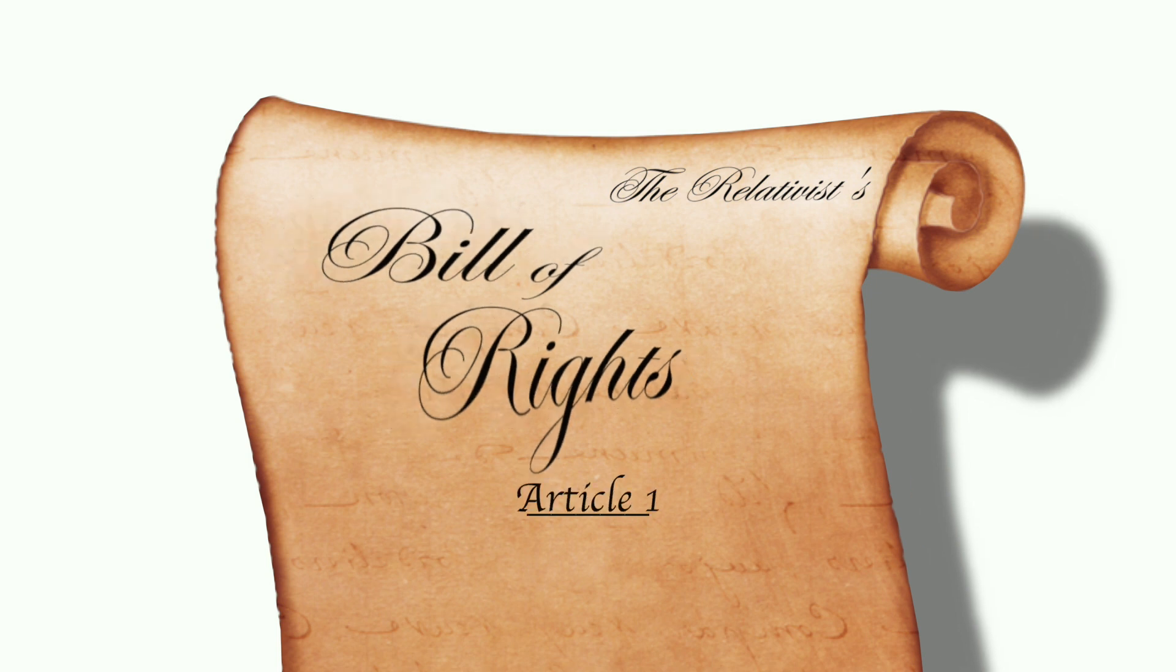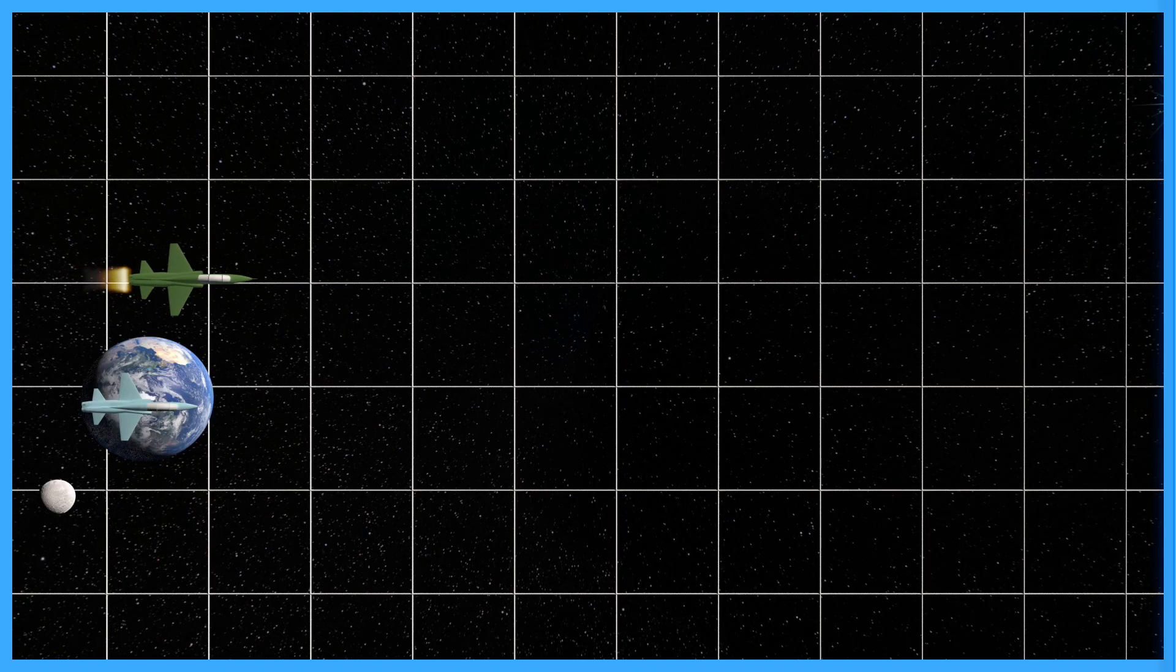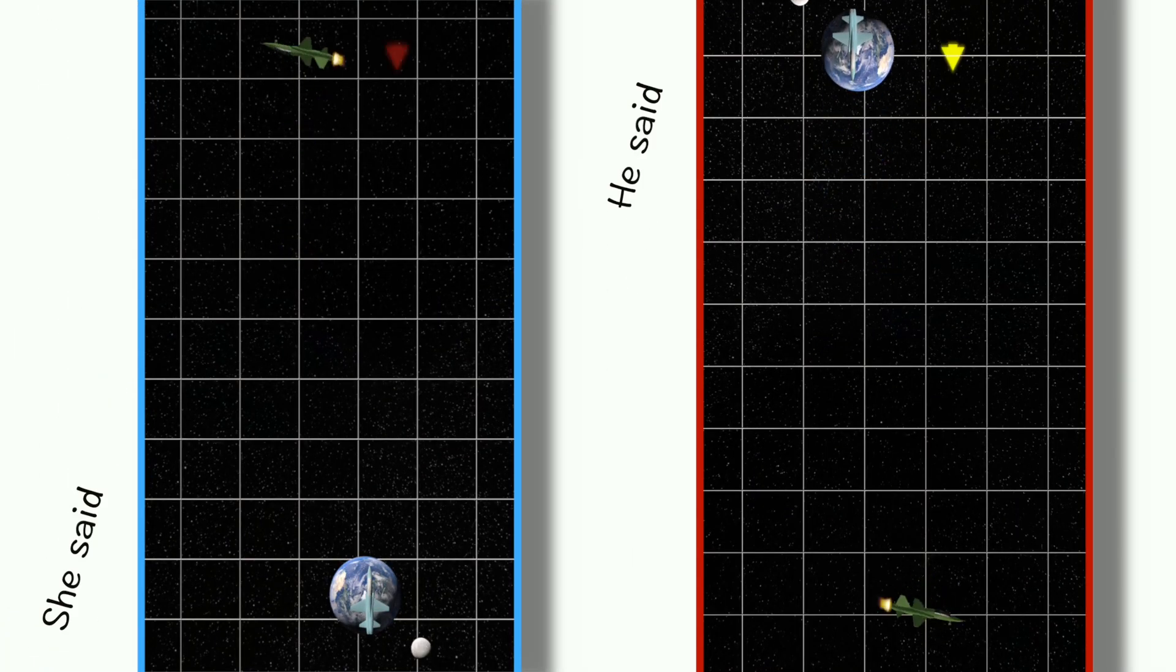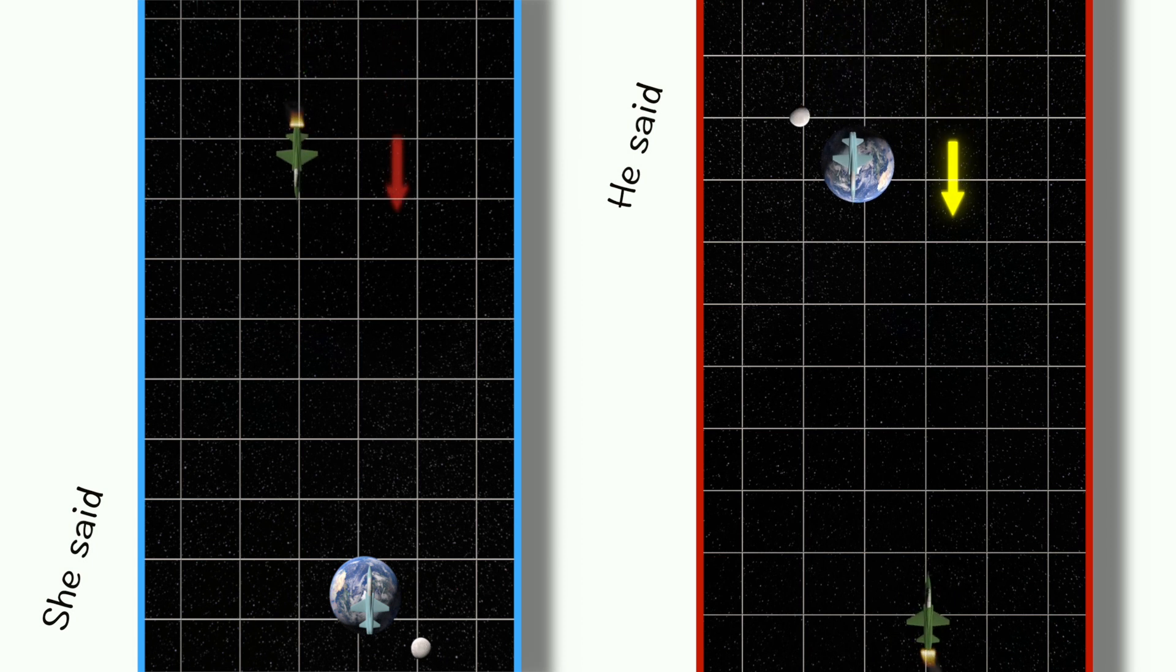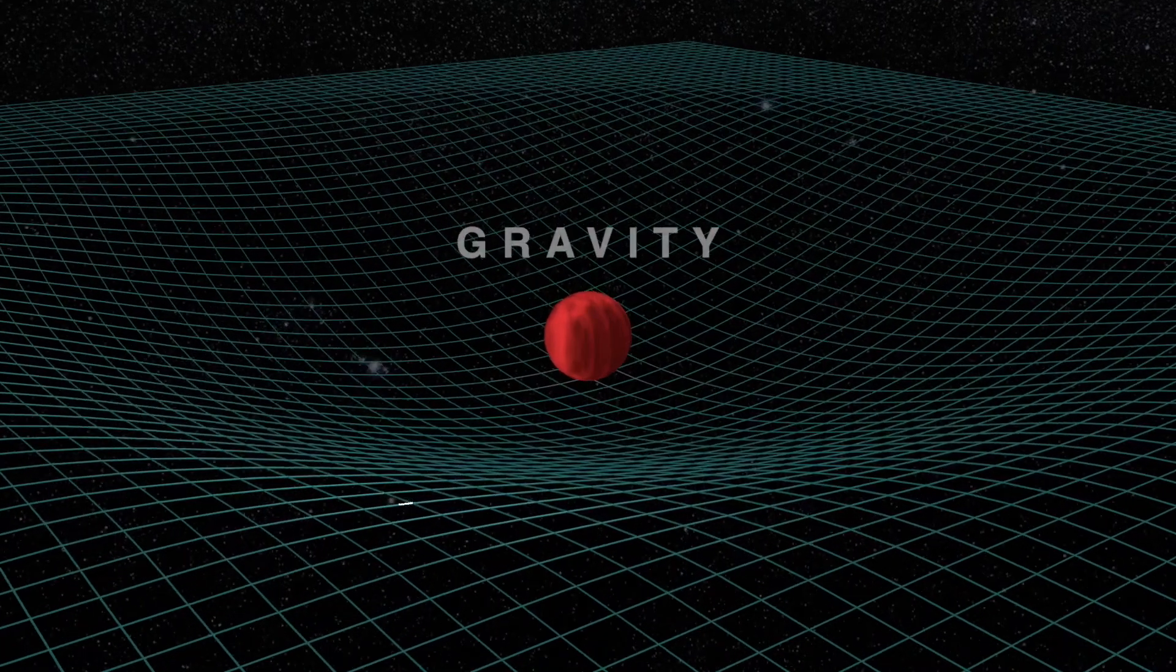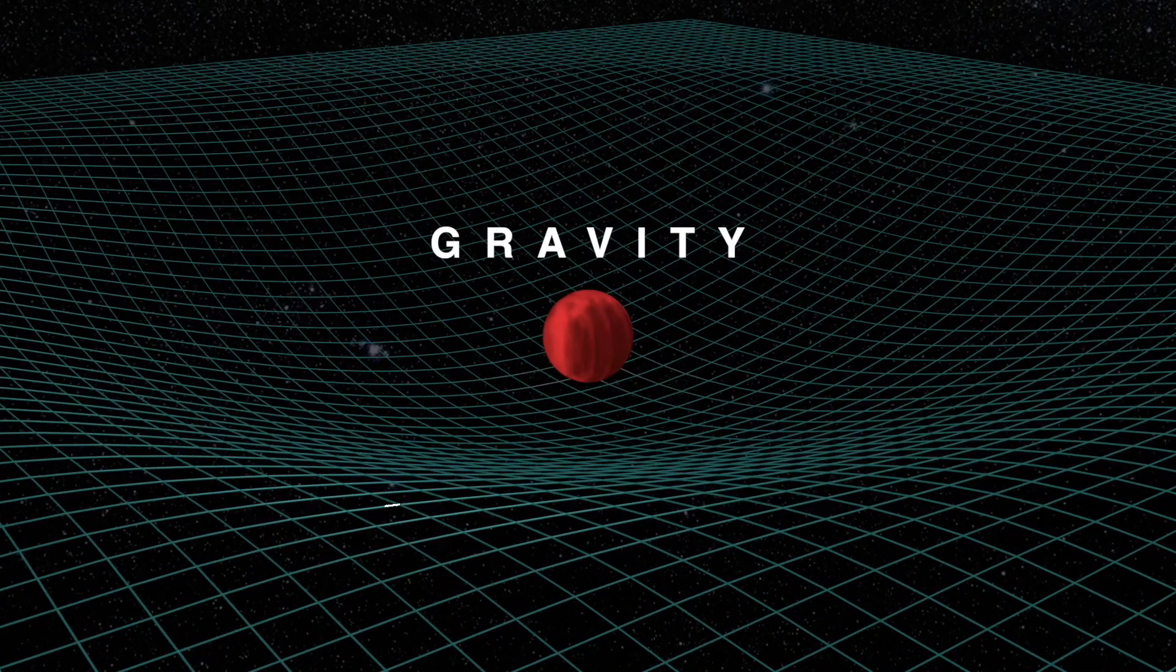We can say that both twins have equal right to claim that they are at rest the entire journey. But how does this work? How can two completely different accounts of motion remain consistent? According to Einstein, the answer is through gravity.